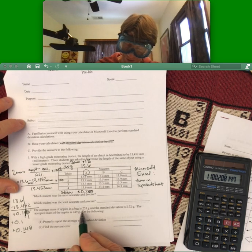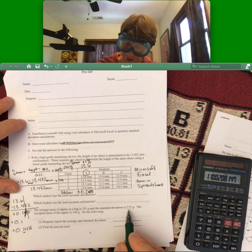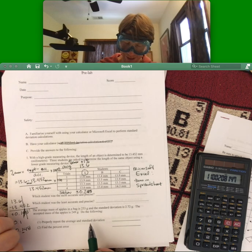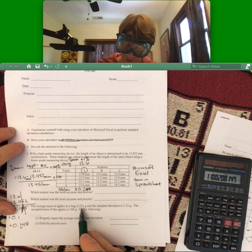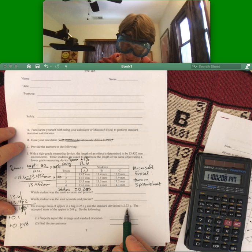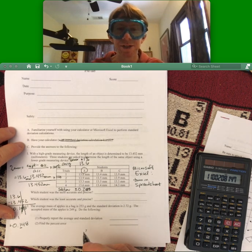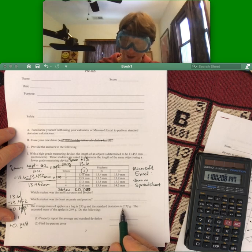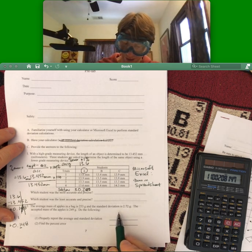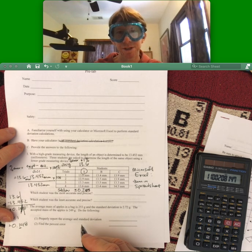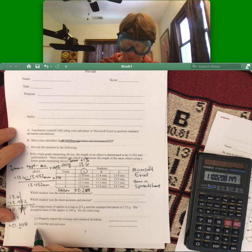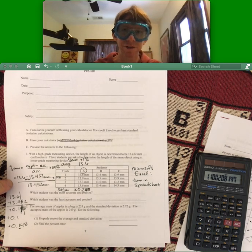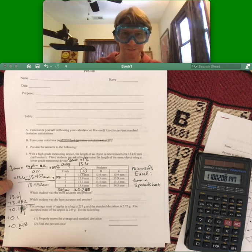Now the average, now number two, the average mass of apples in a bag is 253 and the standard deviation is 2.72. Properly report the average and standard deviation. The trick here is that the average is 253 and the standard deviation is 2.72. Well, so if you'll read over the introduction, you'll find out that the standard deviation only ever has a first digit. That's going to round that up to a three and you can report it as 253 grams plus or minus three grams for number one. And then you can find the percent error doing a similar calculation to what we did right here. And make sure that you account for your sig figs and make sure that you show your work for that calculation.